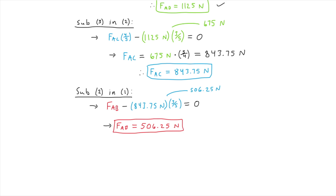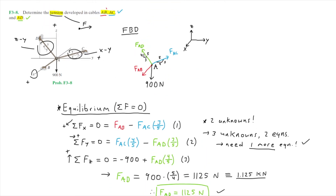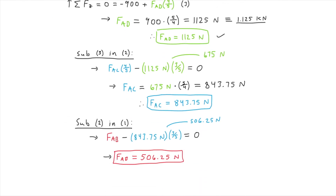So the tension in cable AB is 506.25 newtons, which completes this problem as we have now found the tensions in all cables. Notice that each of these forces is positive, which implies they are tensile forces — which is what we expect. Positive forces mean forces in tension, pointing outwards from a source.